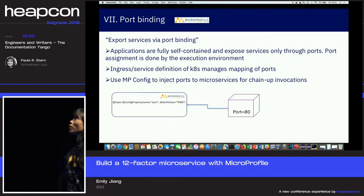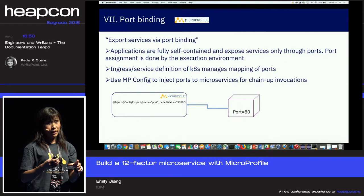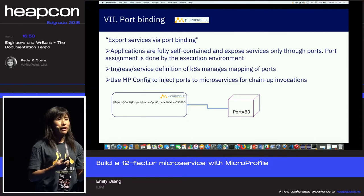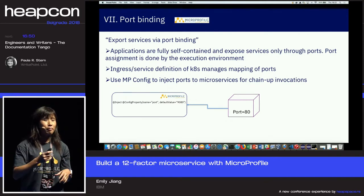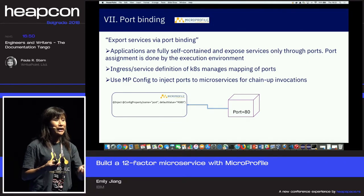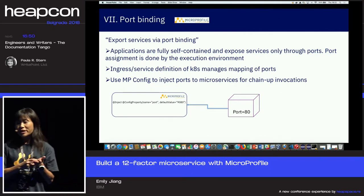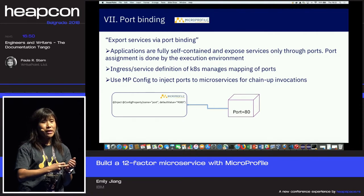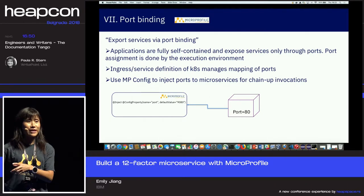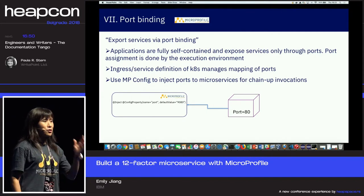The seventh factor is Port Binding. When you deploy a microservice — a RESTful service — there will be endpoints exposed for the end user. In development you might bind it to port 9080, but once you put your microservice in Kubernetes, Kubernetes will assign it another port. So you cannot hard-code the port inside the application. For example, if Service A hard-codes Service B's URL as localhost:9080 and you deploy both to a Kubernetes cluster, it will stop working because Kubernetes manages the port. Always use port binding and make sure the port can be overridden in the Kubernetes environment.